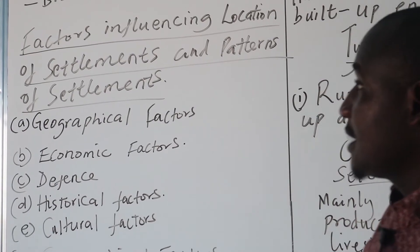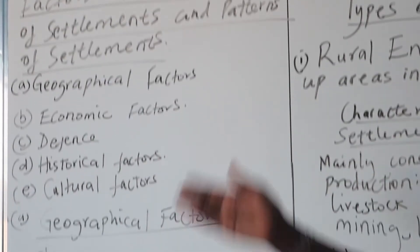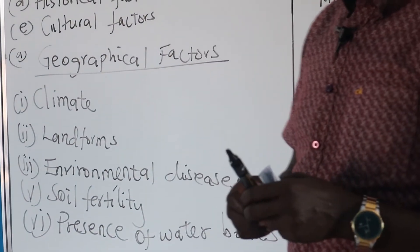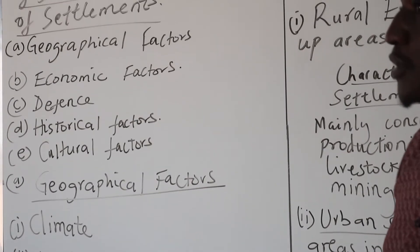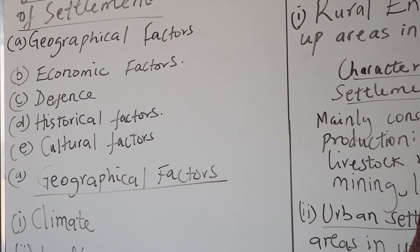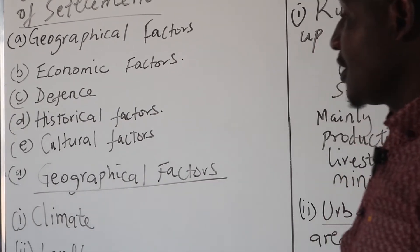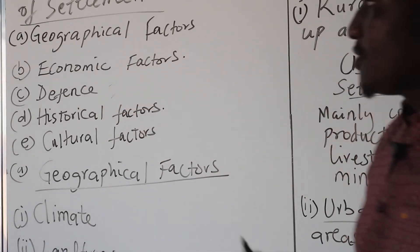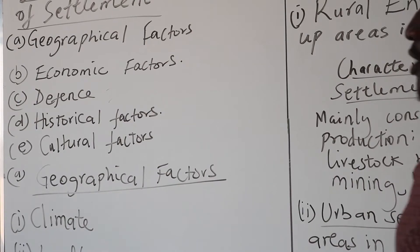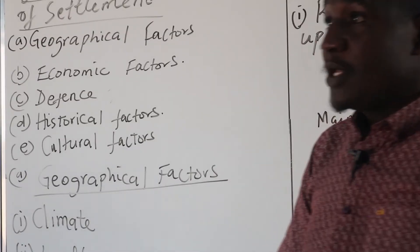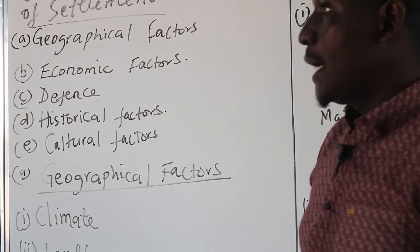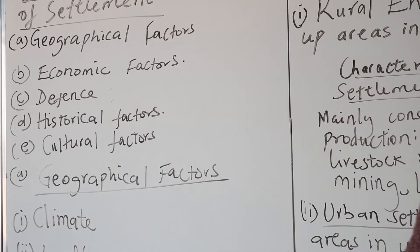Geographical factors have to do with basically the environment — the surroundings of man. Economic activities such as farming, fishing, and mining mean people will tend to live in areas of economic activity depending on their natural environment. Regarding defence, areas which are secure will always attract large settlements. There are also historical factors — certain clans or communities believe that areas where they live belong to them, what we call ancestral land.